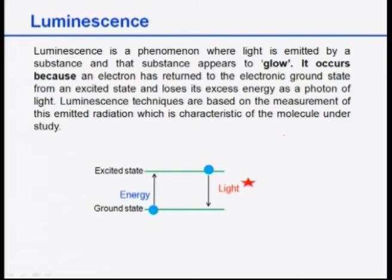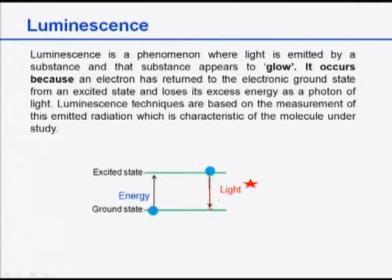Luminescence occurs mainly because of electronic transitions. An electron excited from the ground state to the excited state by some form of energy — photo energy, chemical energy, or sound energy — once it returns from the excited state to the ground state, it loses the excess energy in the form of light, and that is why photoluminescence happens.